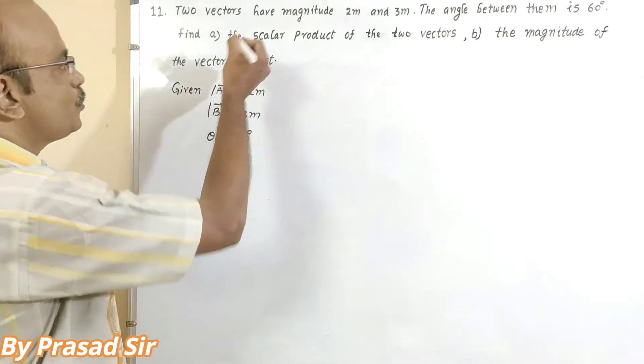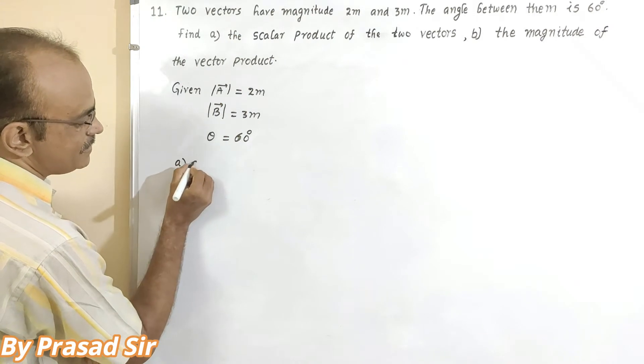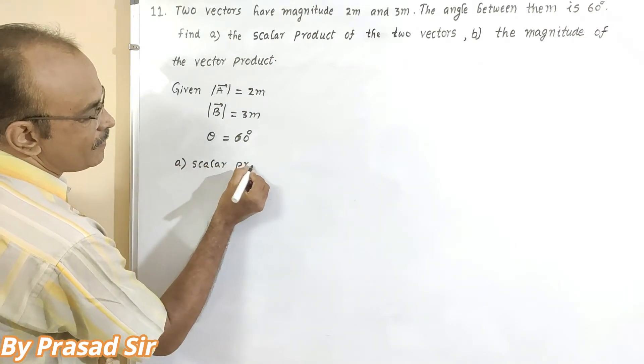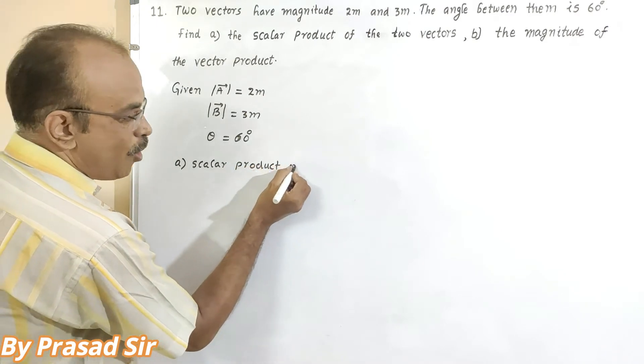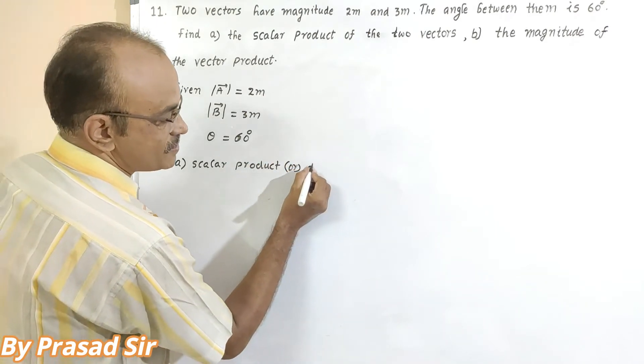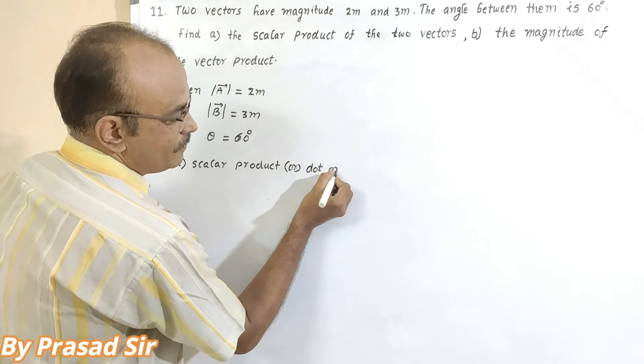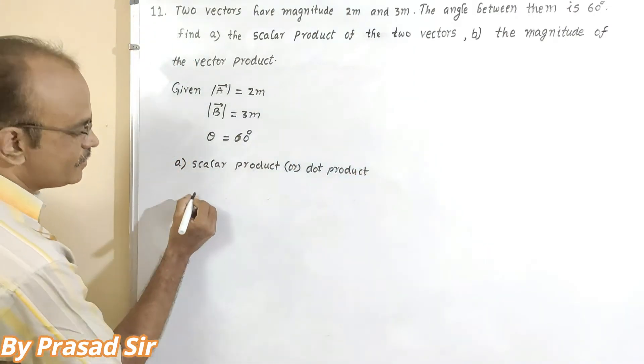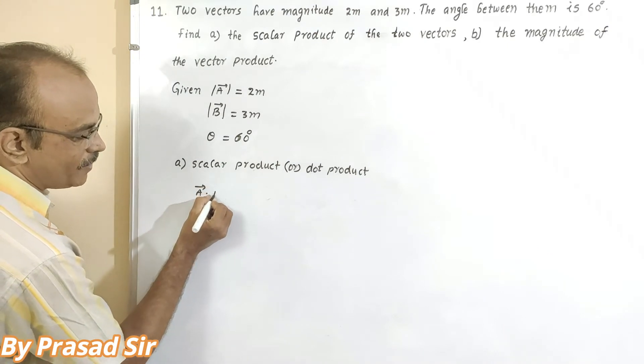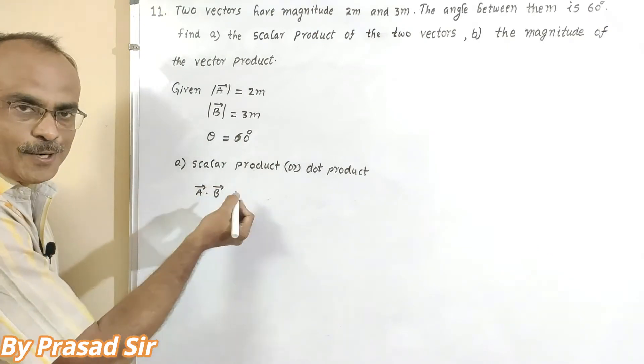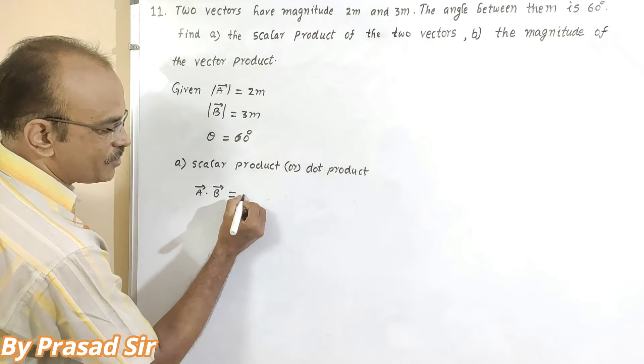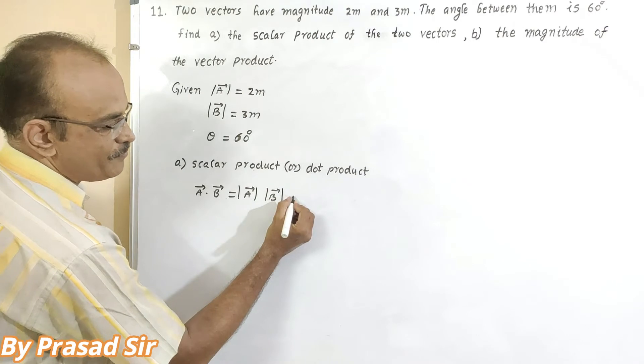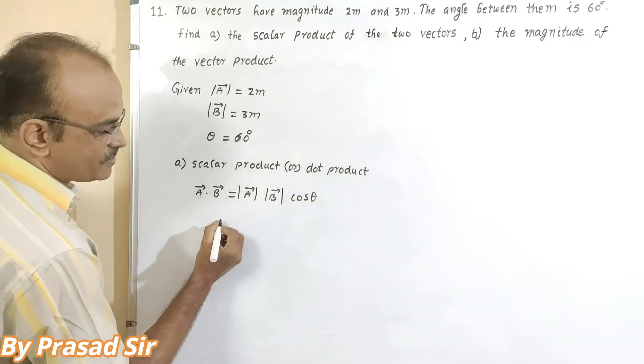So first of all, to solve A, that is scalar product or dot product of two vectors. I will write the formula. Dot product or scalar product of two vectors is equal to magnitude of A and magnitude of B into cos theta.